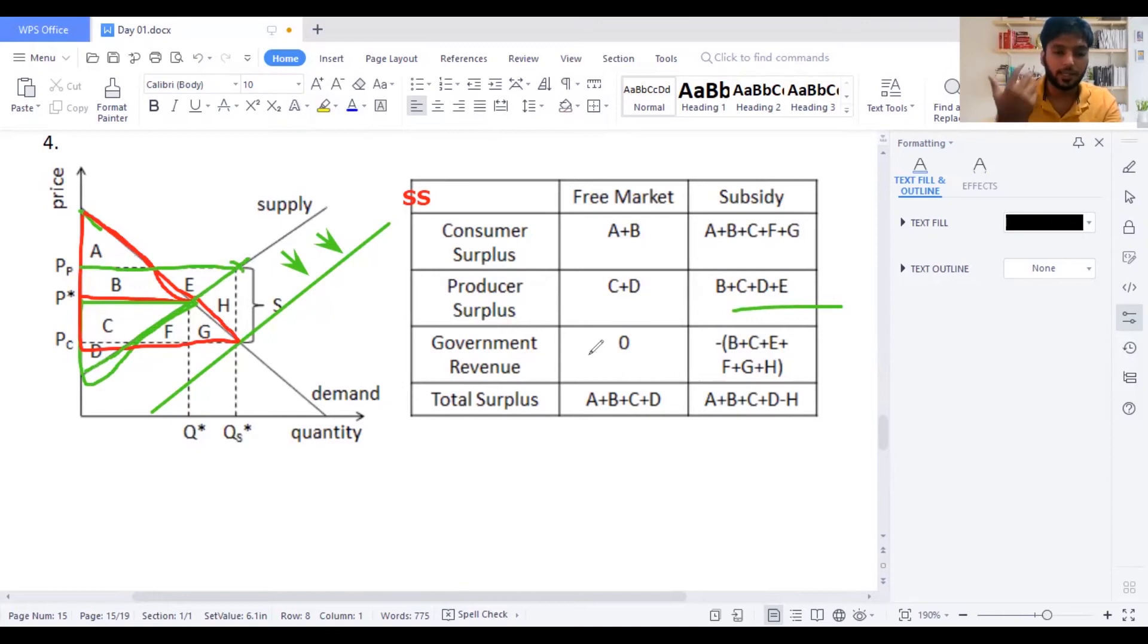Now there is no government actually in taxes. In taxes, the government earns an income. Here, government earns no income. Earlier, they didn't earn income. Now they are earning a minus income. What is the minus income you need to represent? What the government is actually losing. This entire part is the part the government is losing. Because this was the actual price earlier in the market. Now government has given a subsidy. So the price goes there.